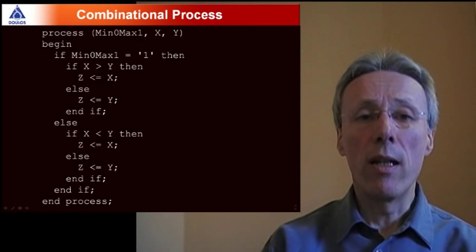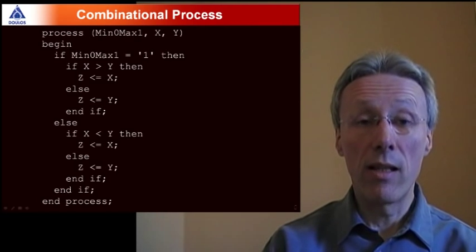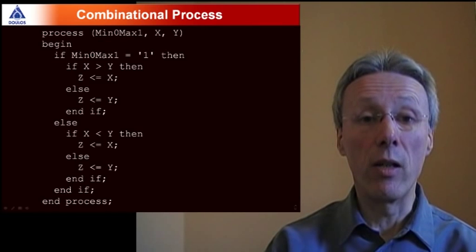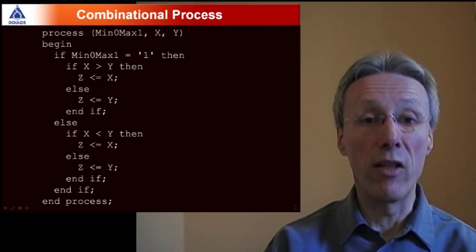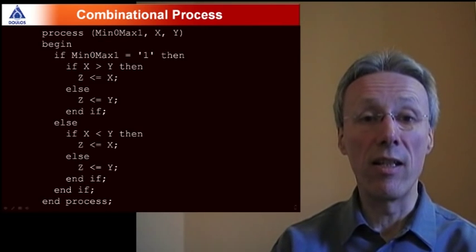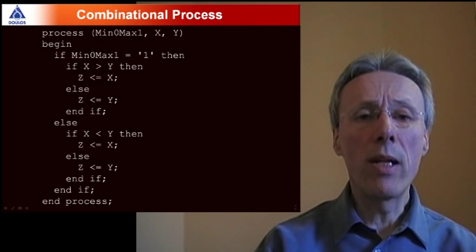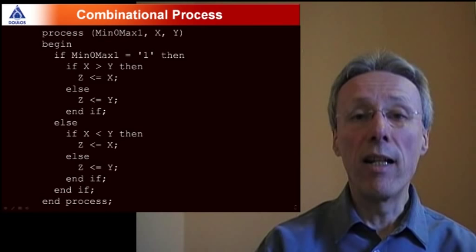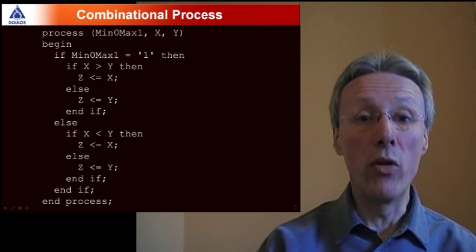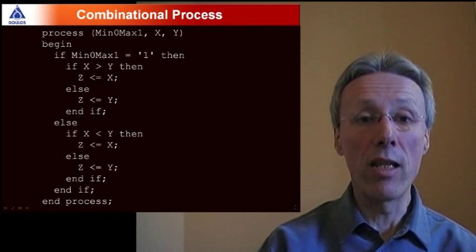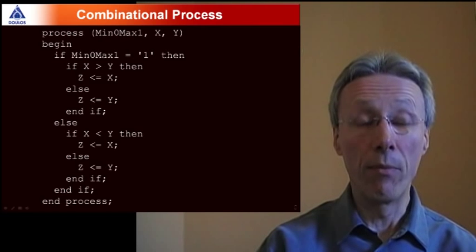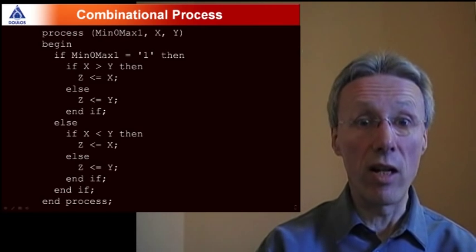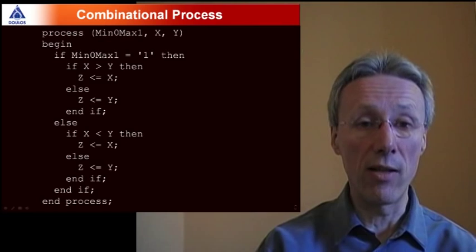So let's start off with an example of a combinational process that was actually taken from a Doulos training course. If any of you have attended Doulos VHDL training, you might recognize this example. It's a combinational circuit that takes in two numbers, x and y, and calculates either their minimum or their maximum value, depending on another input, min 0, max 1. So I'm going to use this as an example to start illustrating some features from VHDL 2008.